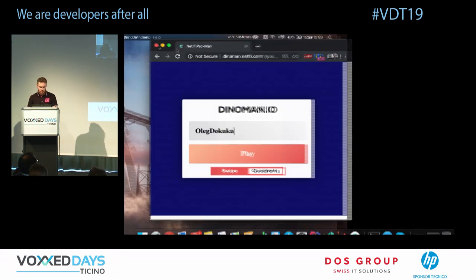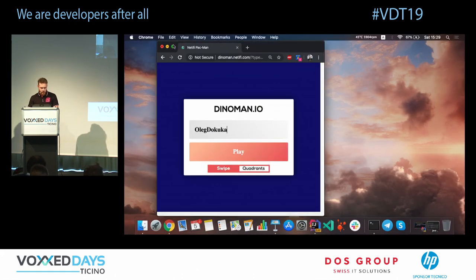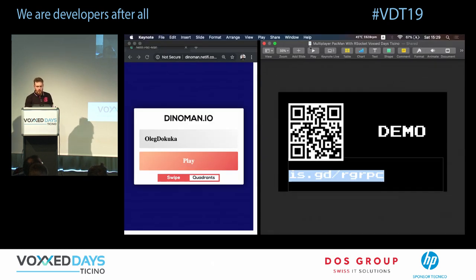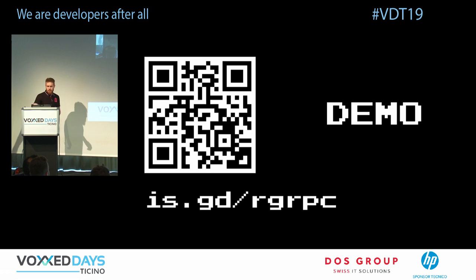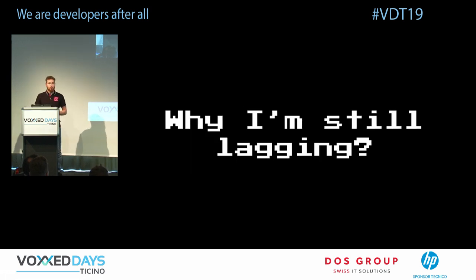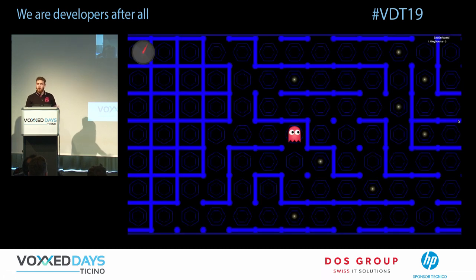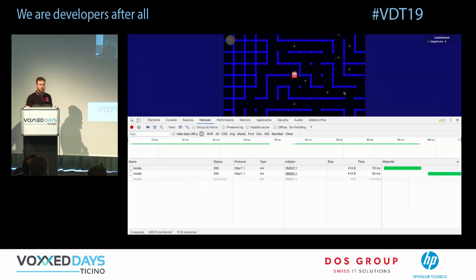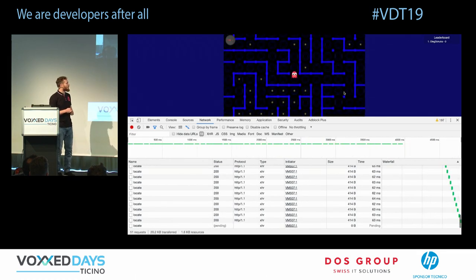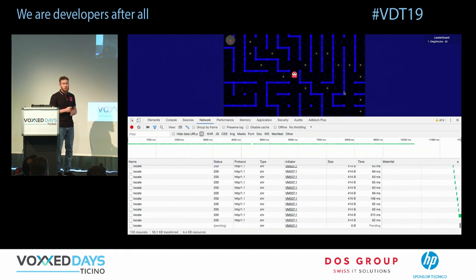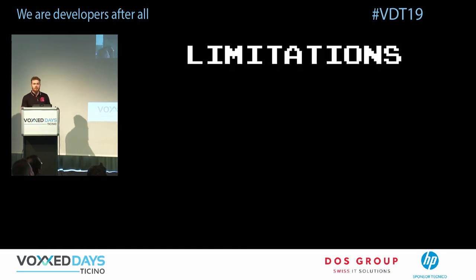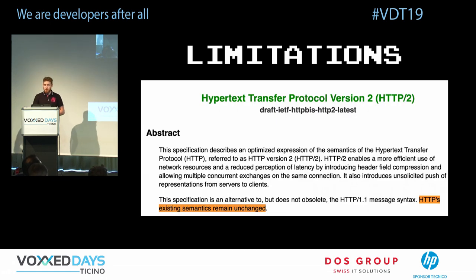Let's move to slides and figure out what's wrong with gRPC and why it's still lagging even though it claims to be a high-performance framework from Google. To understand, open the browser console while moving — you'll see lots of location requests using HTTP/1. Even though it could be HTTP/2, the problem is clear.